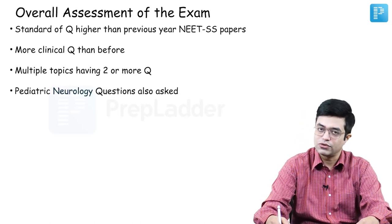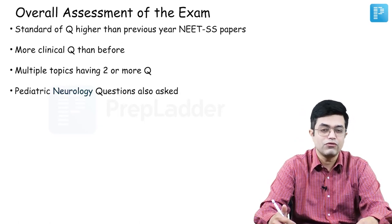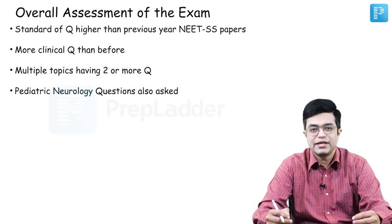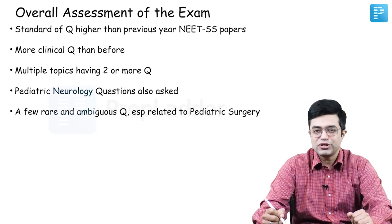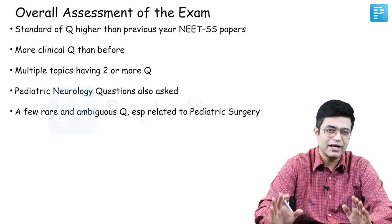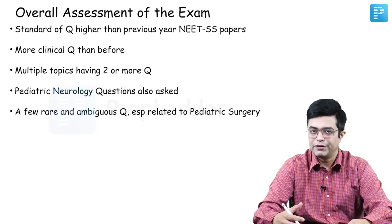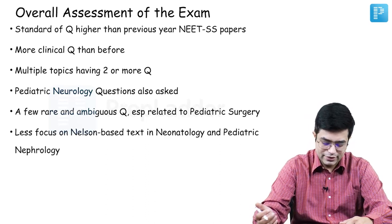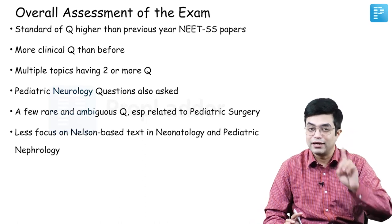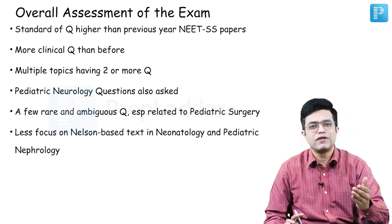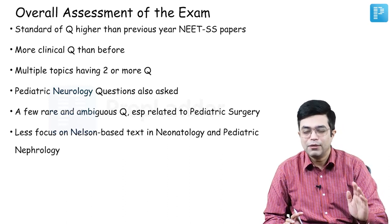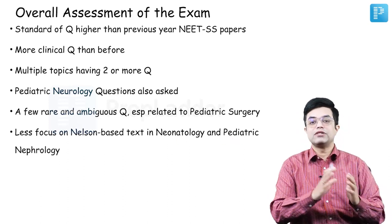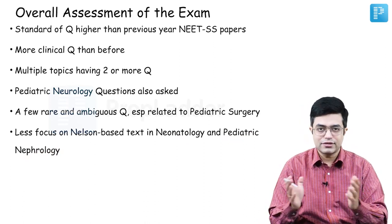Pediatric neurology questions were also asked — there were a lot of questions related to absence seizures, spinal muscular atrophy, muscular dystrophies, and myotonic dystrophy. Pediatric neurology is expected to be a game decider in future exams as well. There were a few rare and ambiguous questions especially related to pediatric surgery — things not directly mentioned in most standard texts. Some pediatric surgery aspects also need to be covered for future exam preparation. There was less focus on Nelson — relatively speaking — with about 70–80% of questions from Nelson overall, but less reliance in neonatology and pediatric nephrology where non-Nelson based things were also asked.